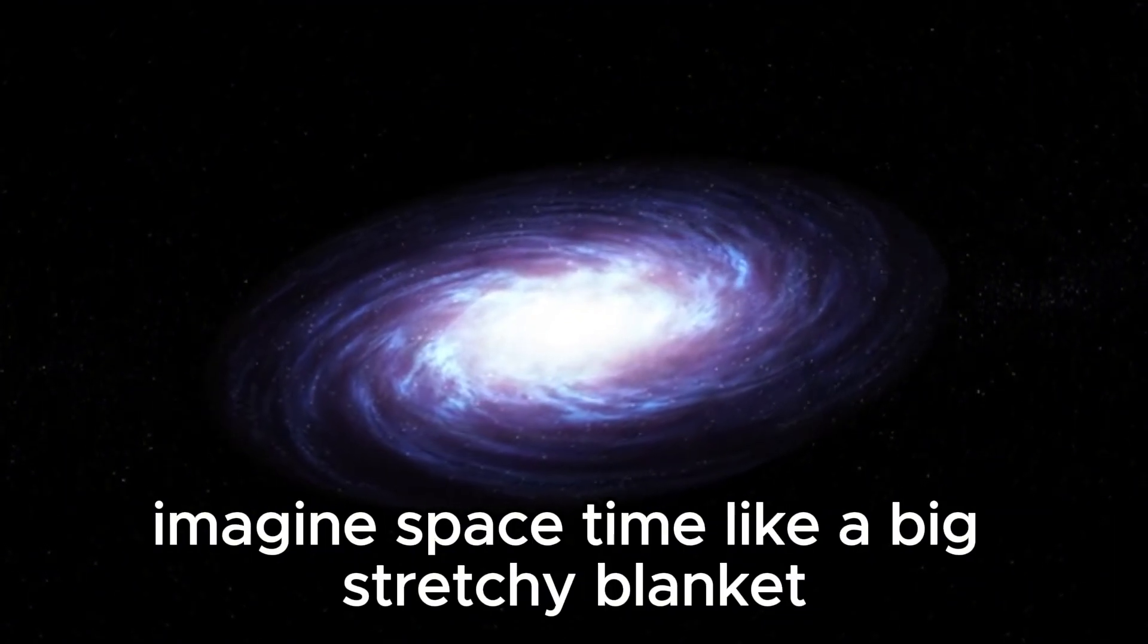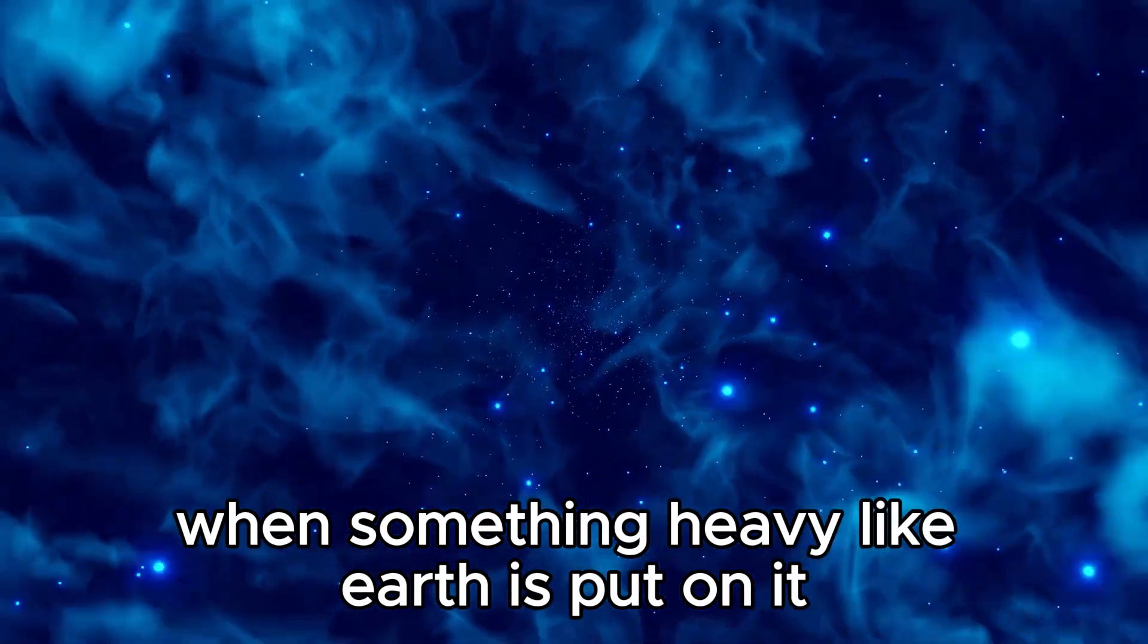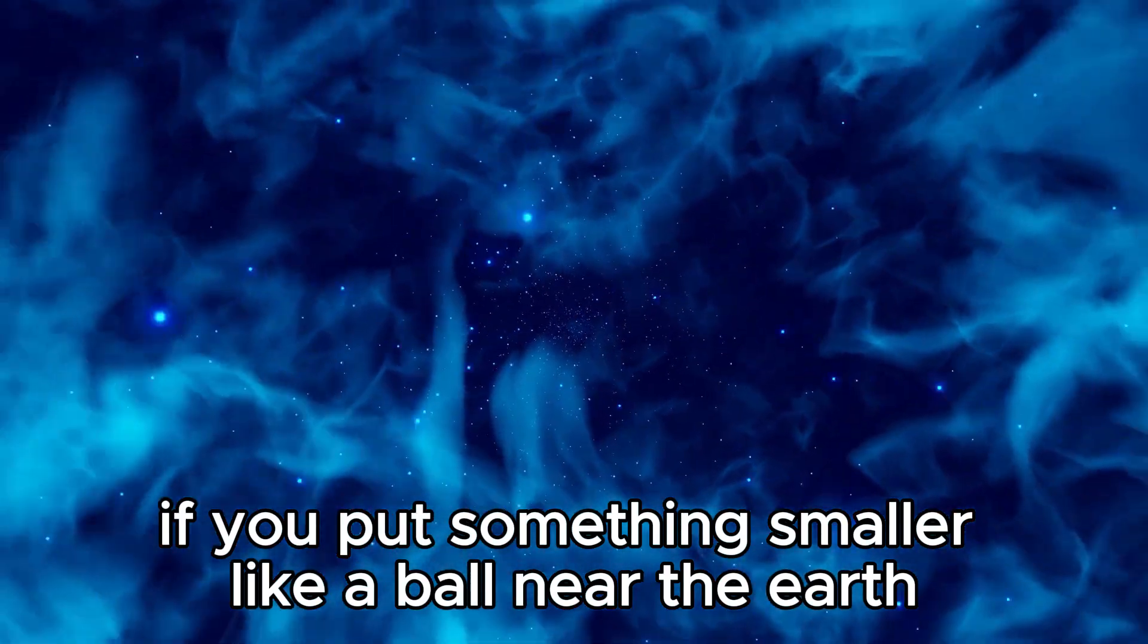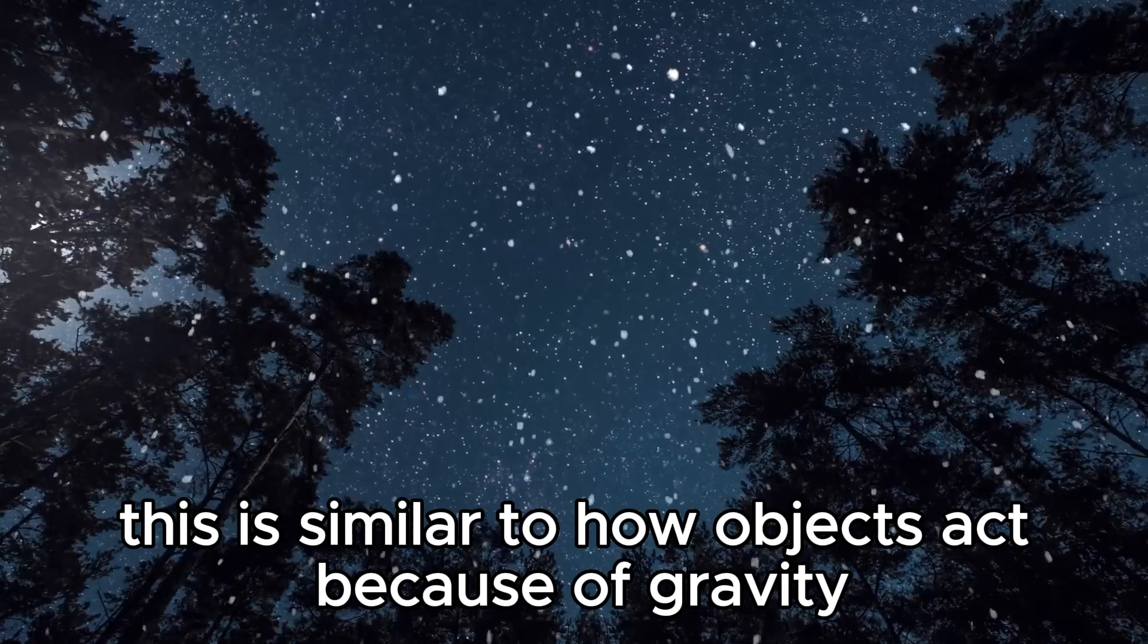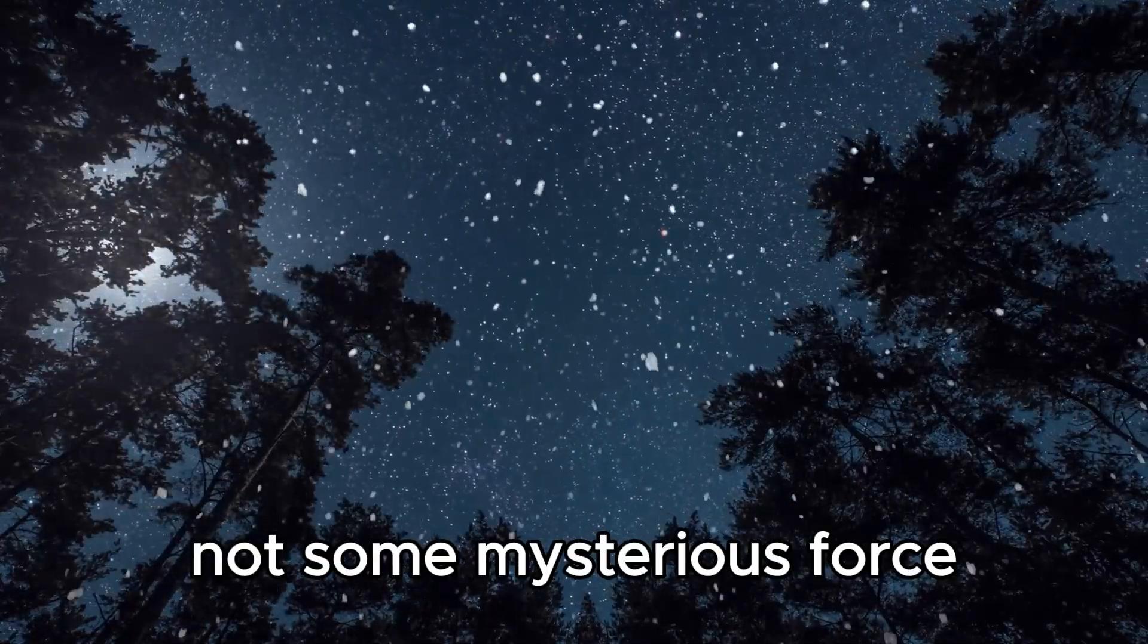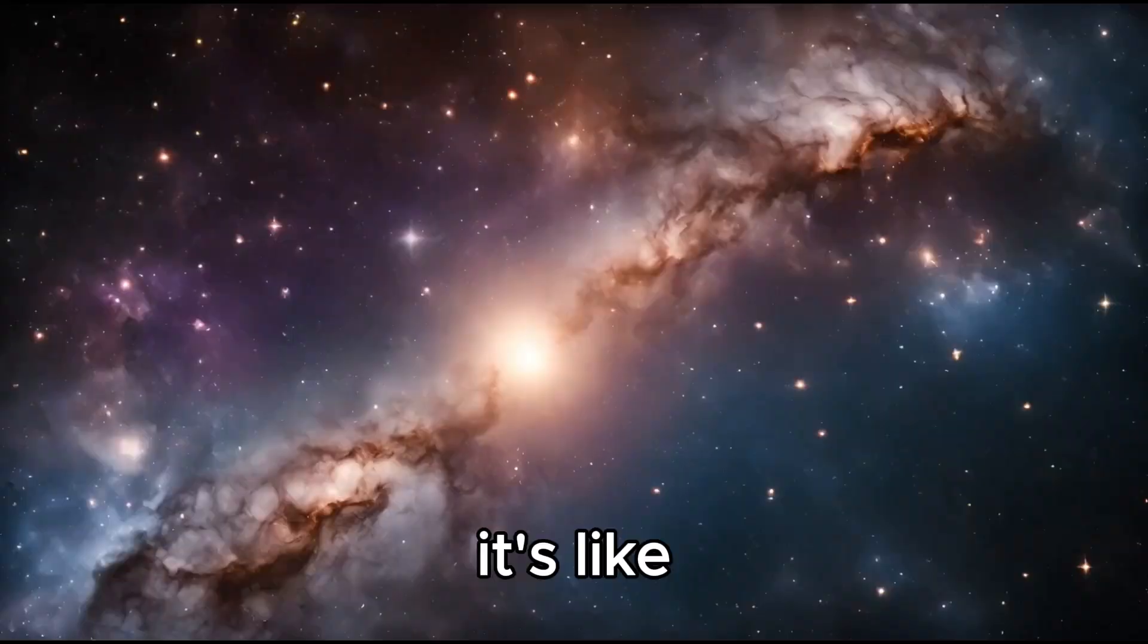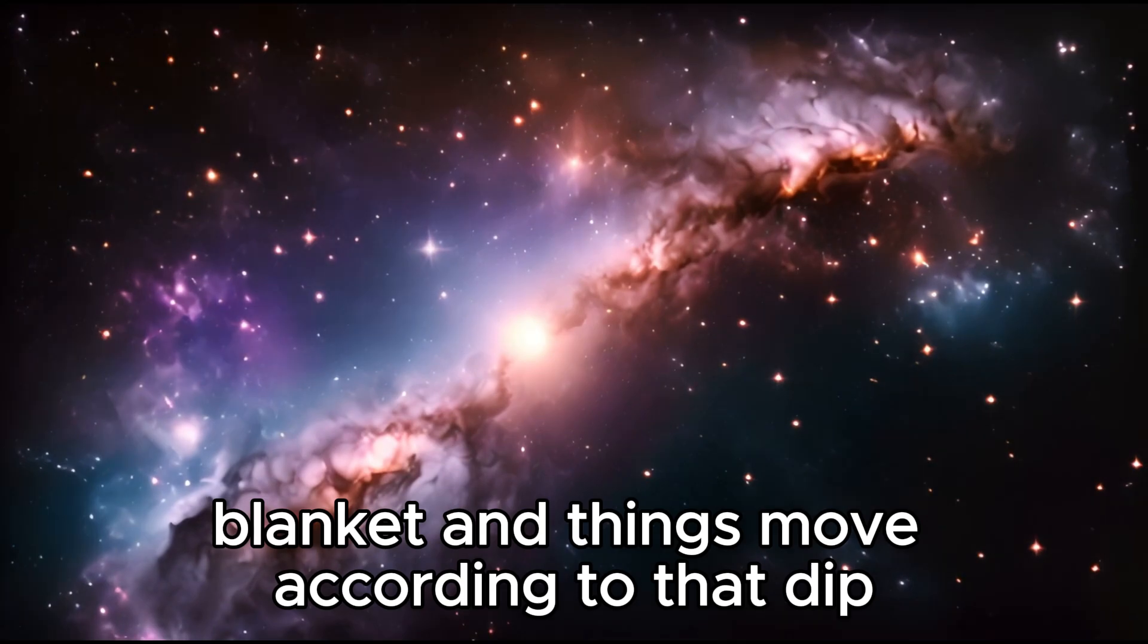Imagine space-time like a big, stretchy blanket. When something heavy like Earth is put on it, it creates a dent in the blanket. If you put something smaller, like a ball, near the Earth, it will roll toward this dent. This is similar to how objects act because of gravity. Not some mysterious force, but a reaction to the bending of space-time. It's like the Earth creates a little divot in the space-time blanket, and things move according to that dip.